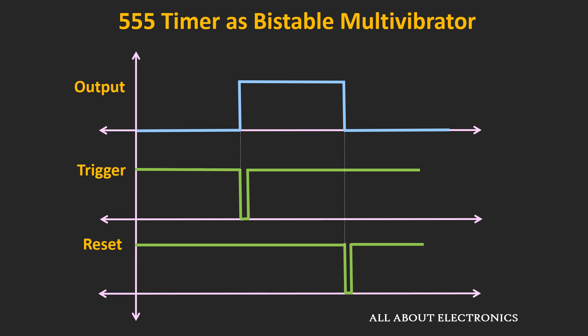If we see the same sequence on a timing diagram, it will look like this. Initially, the output of the 555 timer is logic zero. Whenever this trigger pin goes low, the output will switch from logic low to logic high. And once again the output will become low whenever this reset pin goes low. So at any given point of time, this bistable multivibrator stores either logic zero or logic high, meaning it acts like a flip-flop circuit.